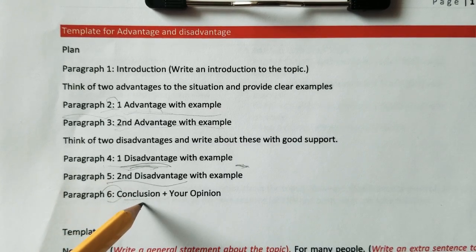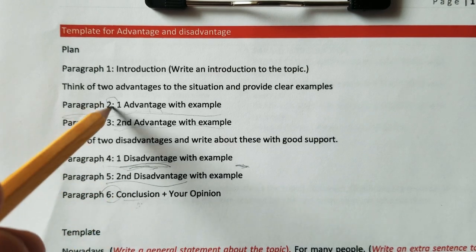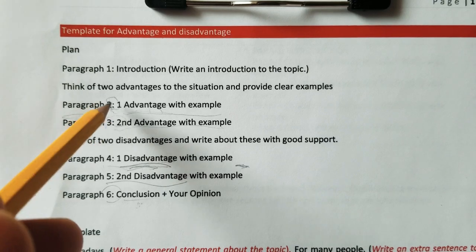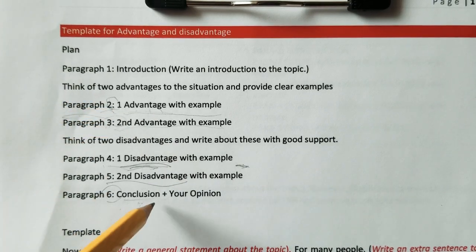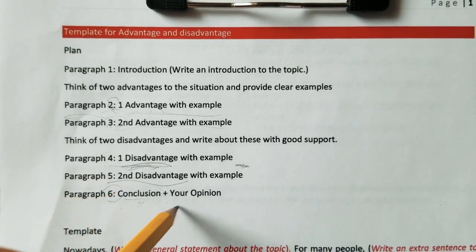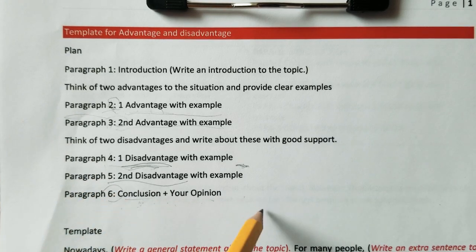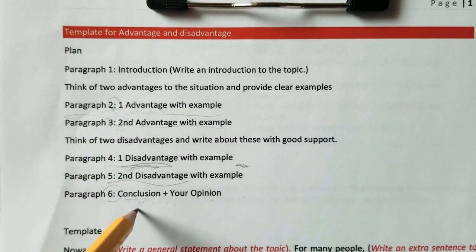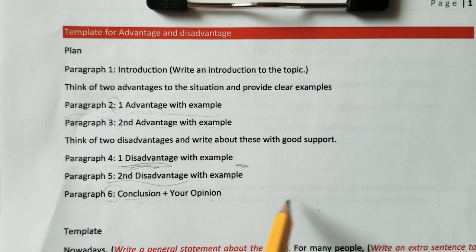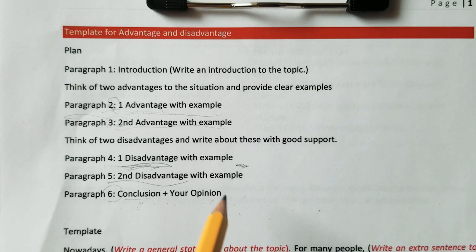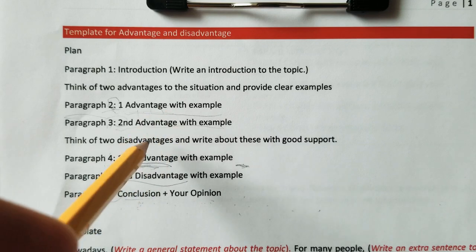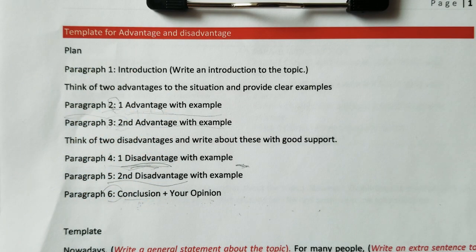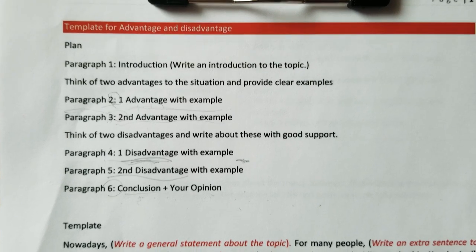In paragraph six you write the conclusion. Summarize the two advantages you mentioned in paragraphs two and three in your own words, then summarize the two disadvantages from paragraphs four and five, and write your opinion — for example: 'We do have some drawbacks because of tourism, but tourism brings more money which basically strengthens the country's economy.' Now let's have a quick look at the template — you just need to fill in the highlighted parts with your own words.